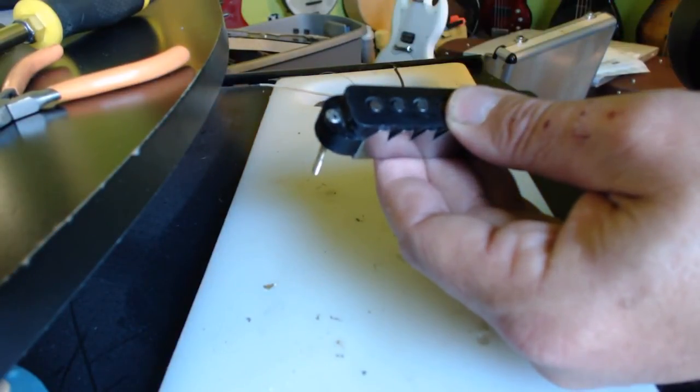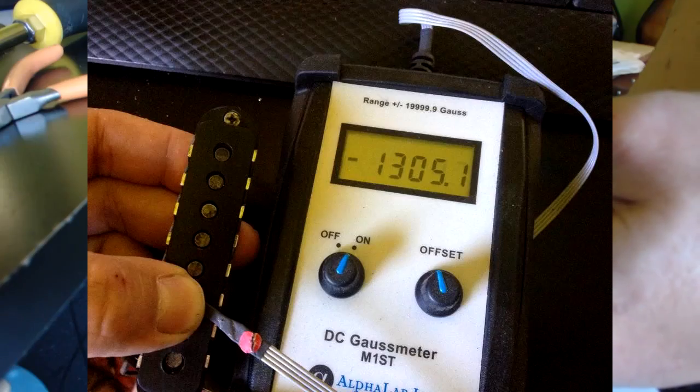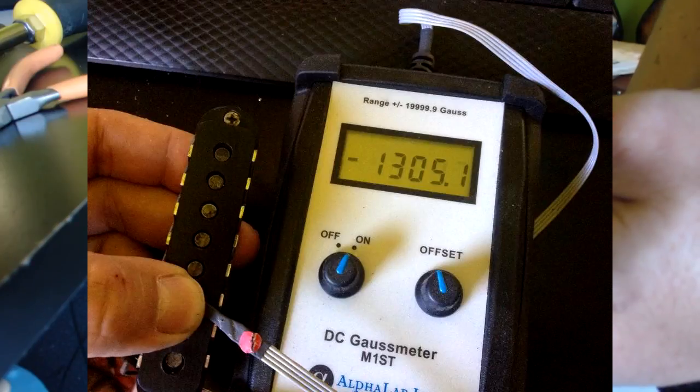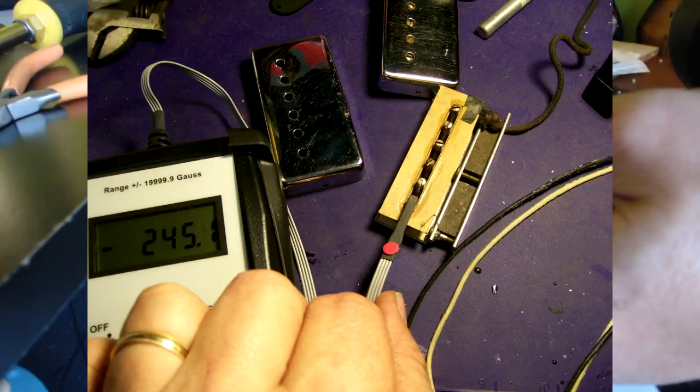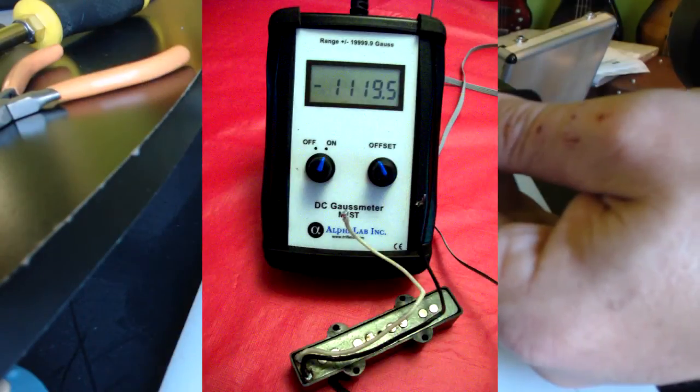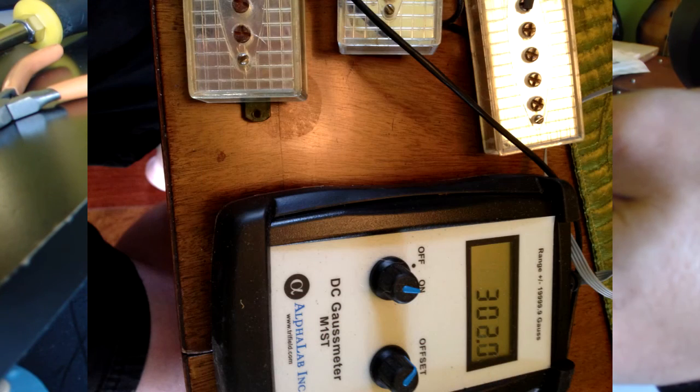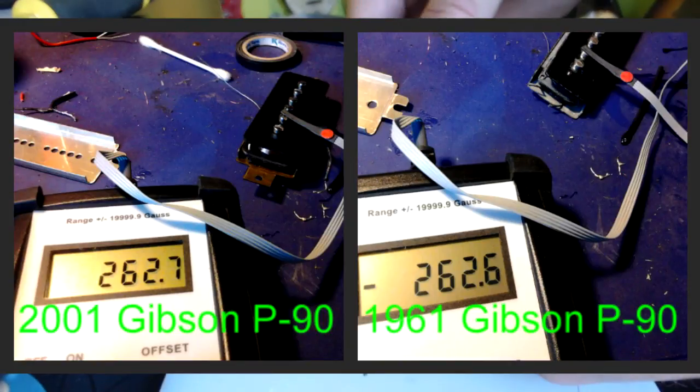One of the things that I like to do with any of these old Fender pickups or any old pickups that I get a hold of is I get my gaussmeter out and I check the power of the magnets in them. And this is something I've been doing for years. I originally started doing it because of the claim that magnets lose power over time and those old magnets that have lost a little bit of their power are the ones that sound really good and that's BS. But you know whatever.